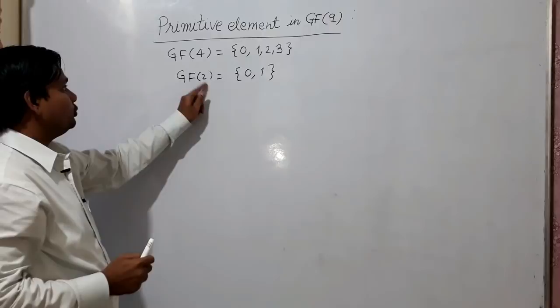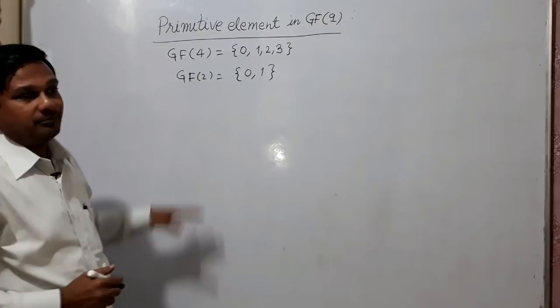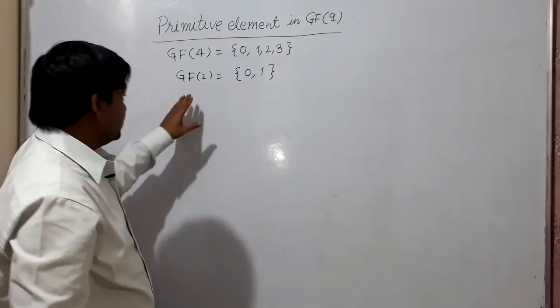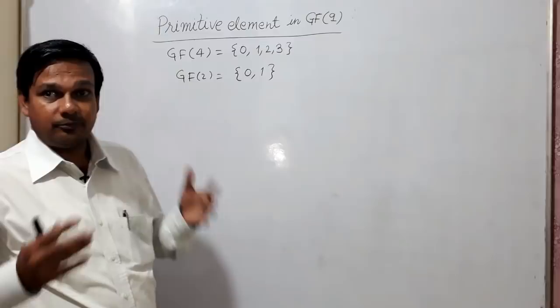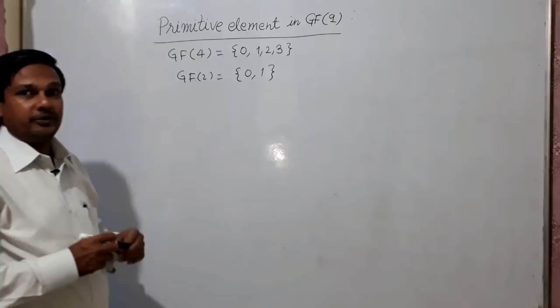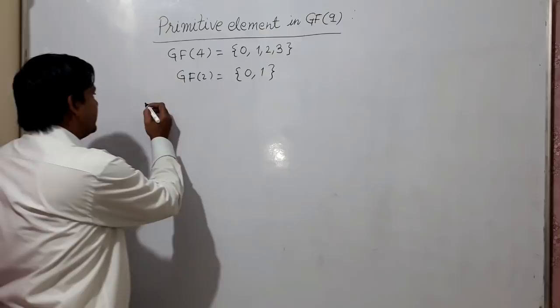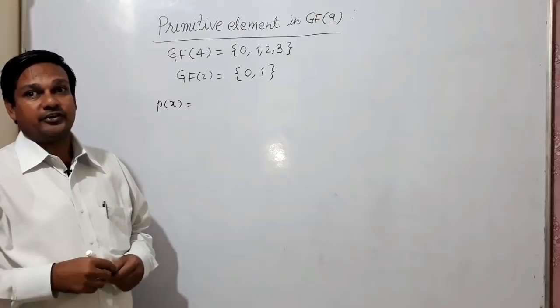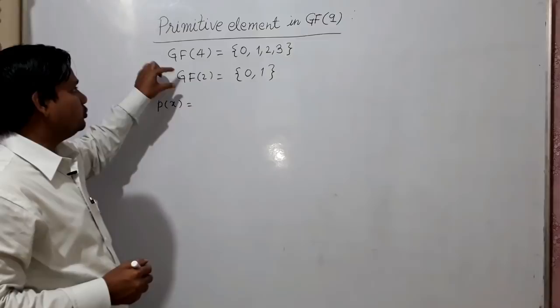We know 2 squared is always 4. So what can the primitive polynomial be here? We will take a primitive polynomial of degree 2 because 2² = 4. The primitive polynomial will be one that cannot be factorized — it can have no roots.